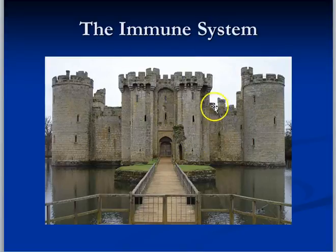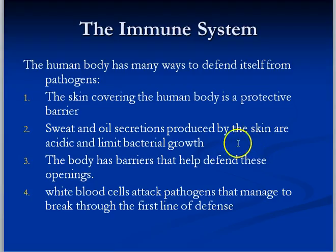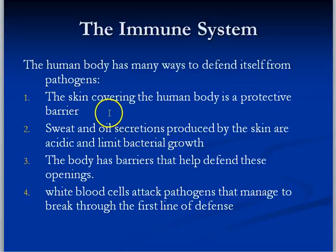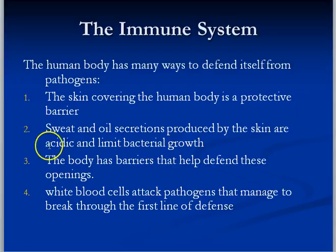Once things get to the inside — once they break through the first line of defense — we would have our military, which for us would be our white blood cells. Our skin provides a protective barrier to prevent viruses and bacteria from getting into our circulatory system. We also have sweat and oily secretions that are typically acidic, which helps to limit bacterial growth.